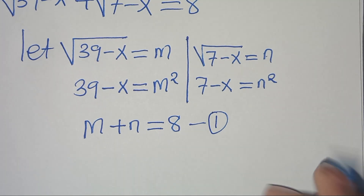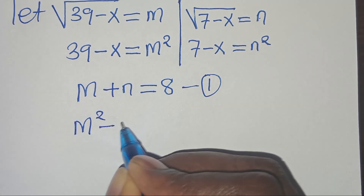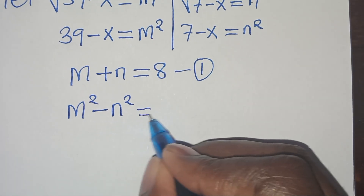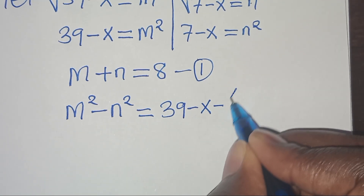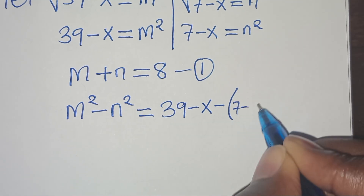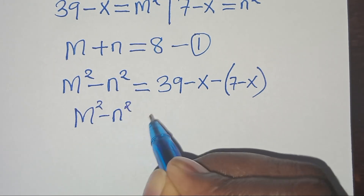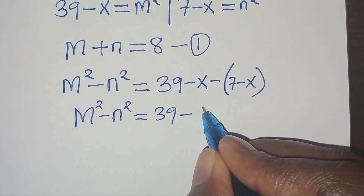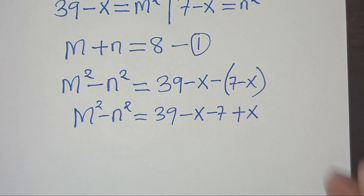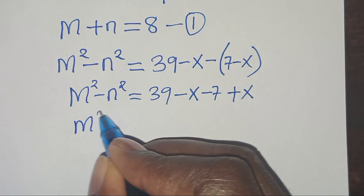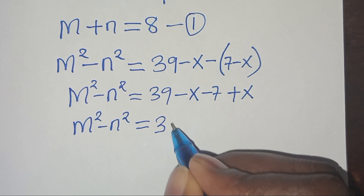Call that equation 1. Now we observe that m squared minus n squared equals (39 minus x) minus (7 minus x), which simplifies to 39 minus x minus 7 plus x. So m squared minus n squared equals 39 minus 7, which equals 32.